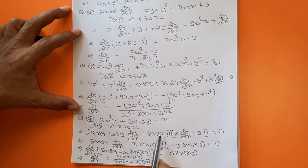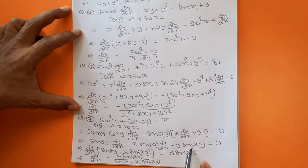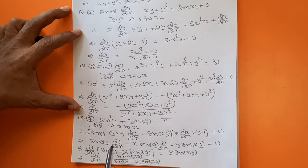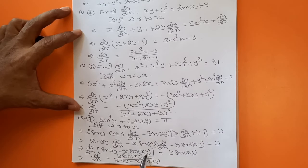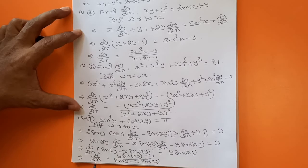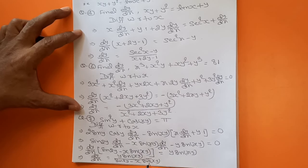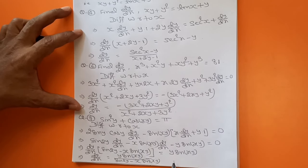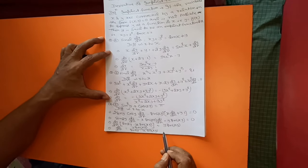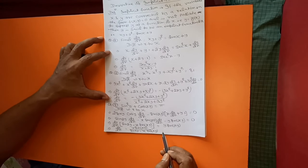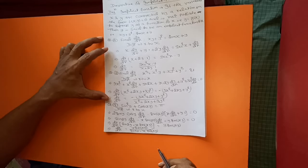Expanding the bracket: −x · sin(xy) · dy/dx − y · sin(xy). Take dy/dx common: dy/dx · (sin 2y − x · sin(xy)) = y · sin(xy). Therefore, dy/dx = y · sin(xy) / (sin 2y − x · sin(xy)). In this way you solve all problems belonging to implicit functions. Thank you.